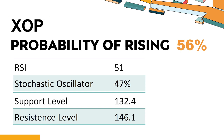The current stochastic oscillator of XOP is 47%. This indicates that the stock is experiencing a strong downtrend and significant selling pressure. An oversold signal might suggest that the stock is reaching a temporary bottom, but it doesn't necessarily mean that the trend will reverse immediately.